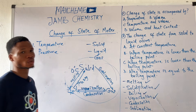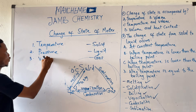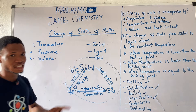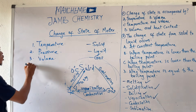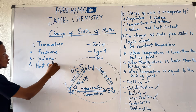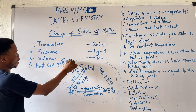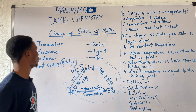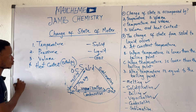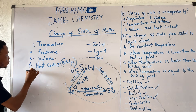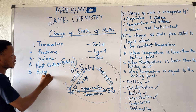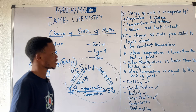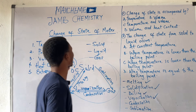Another factor to consider is volume. The volume of a substance will also affect the state of matter of that substance. And also its contents, or what we call entropy. Entropy — that is the state of disorderliness — might also affect the state of matter. So these are the factors that affect the change of state of matter.